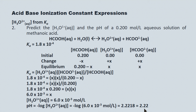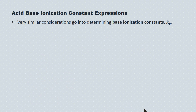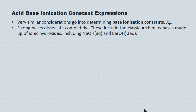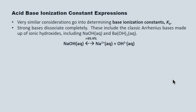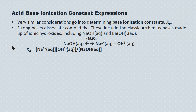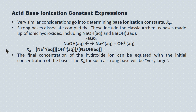In terms of Bronsted-Lowry bases, there's one more equation we have to derive. Very similar considerations go into determining Kb values and working with them mathematically. Strong bases dissociate completely, and typically these include the classic Arrhenius bases, which are ionic hydroxides, including sodium hydroxide and barium hydroxide. For sodium hydroxide, greater than 99.9% of the system exists in its ionic form in solution. The Kb expression is concentration of products over concentration of reactants, and this concentration will all but go to zero, giving a Kb value of, quote-unquote, very large. The final concentration of hydroxide ion can therefore be equated with the initial concentration of the base.